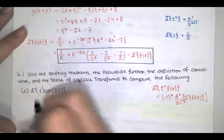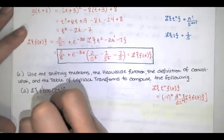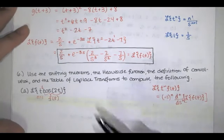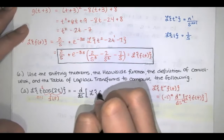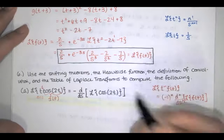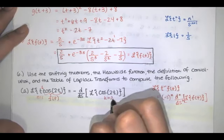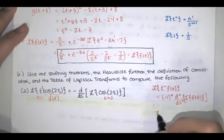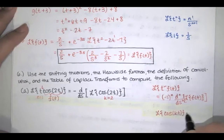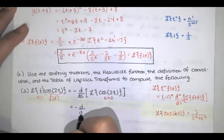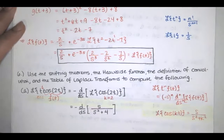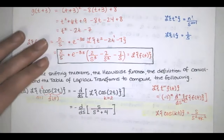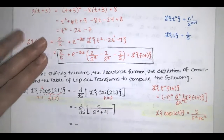That's appropriate here with n equal to 1, since this is t to the n, and cosine of 2t is our f of t. According to this rule, we have negative 1 to the first times the first derivative with respect to s of the Laplace transform of cosine of 2t. Here k equals 2, and the Laplace transform of cosine of kt is s over s squared plus k squared. So this is the negative derivative of s over s squared plus 4, and we'll use the quotient rule.